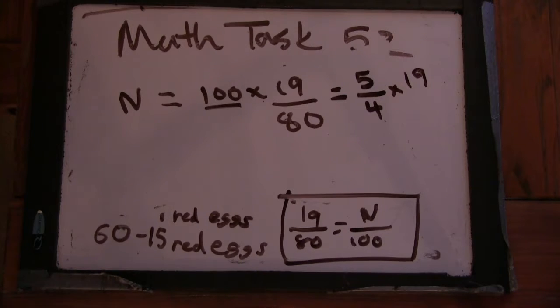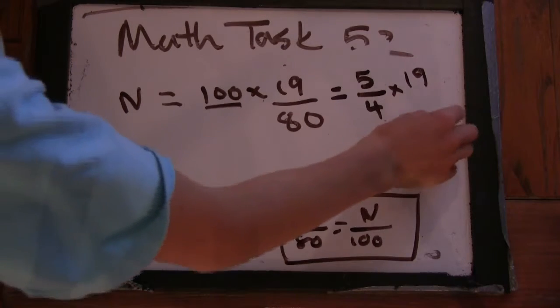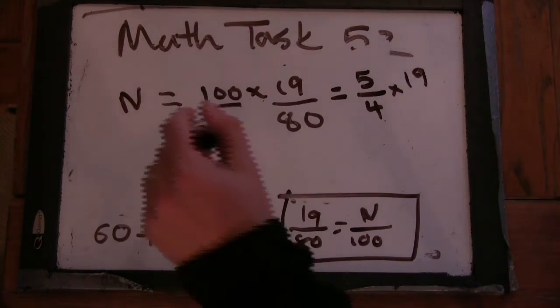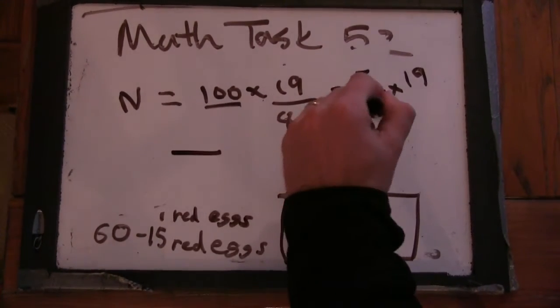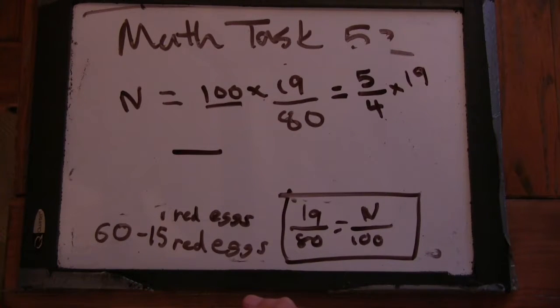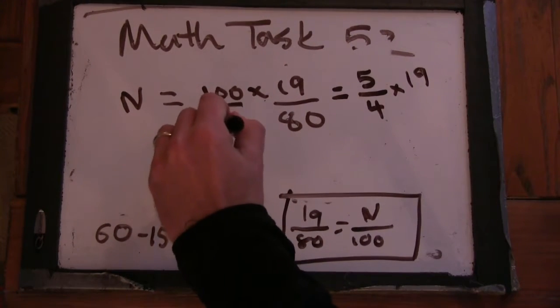That would be, eight, maybe, nine. So, tell me this, tell me this as a fraction. What is five fourths times 19? Tell me that as a fraction. Five, it would be 95 fourths. All right, 95 over four.